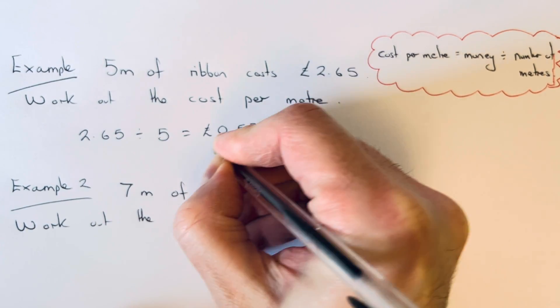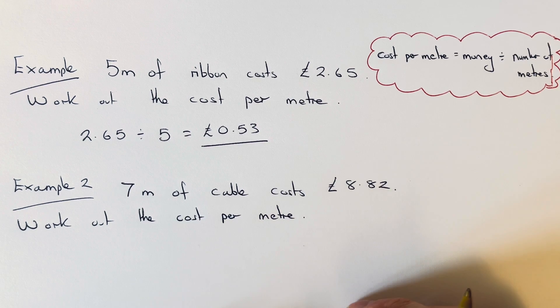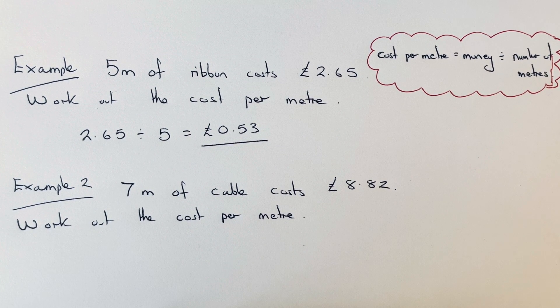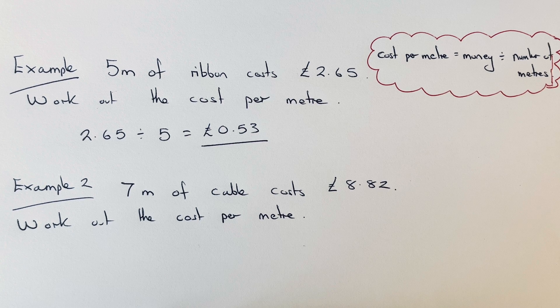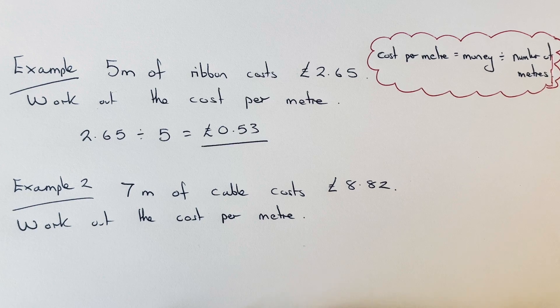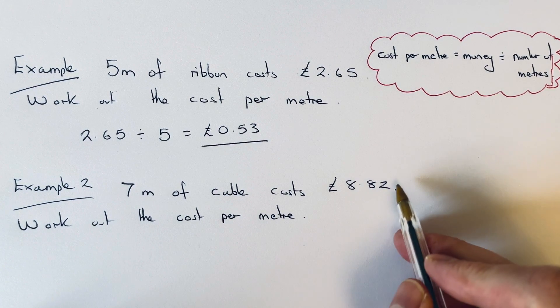So that is the cost for one meter of ribbon. Let's have a look at example two. Seven meters of cable costs £8.82. Work out the cost for one meter of cable. So again, we just get...